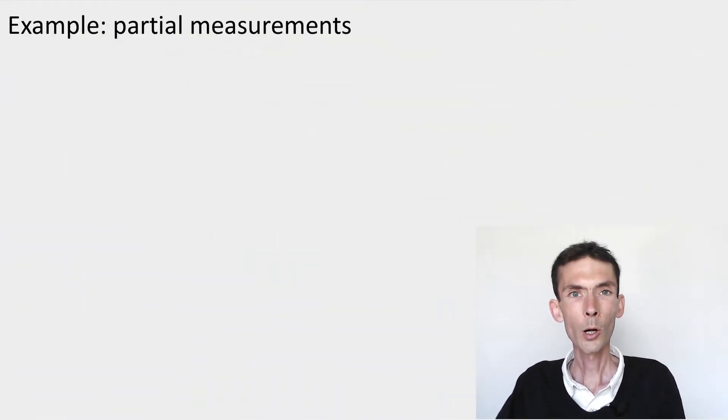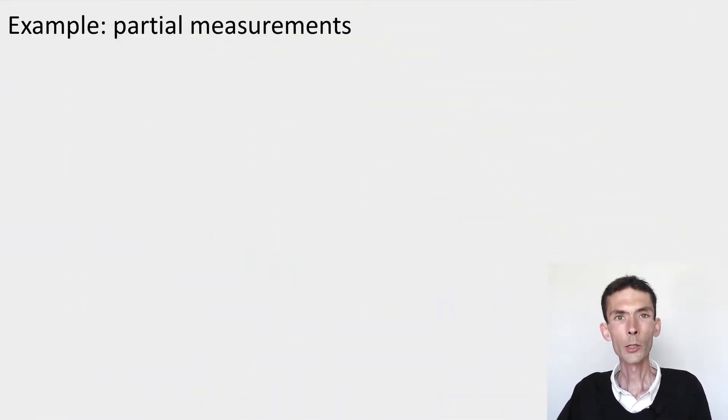In this module, we're going to work out an important example of general measurements. We're going to see how to perform a partial measurement on a bipartite quantum state. Let's do an example.